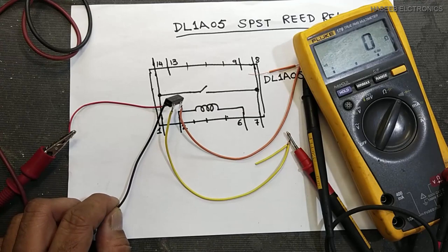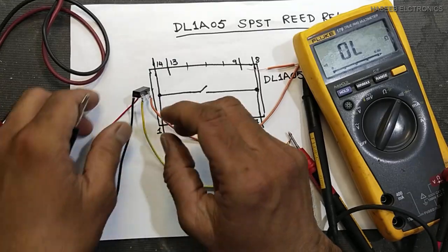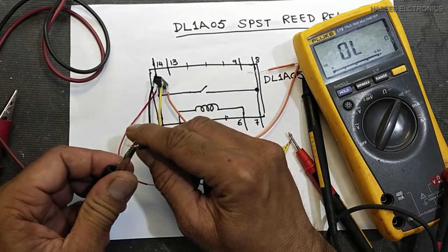So in both cases we have to replace this relay. This is the method: just apply 5 volts here at pin number 2 and 6.